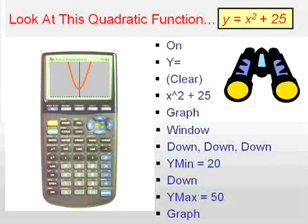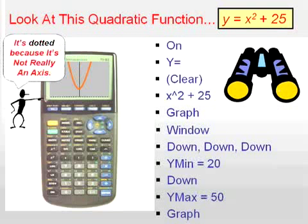Now you'll see the picture that you expected, a quadratic parabola. Now it's interesting to note that this dotted line here is not really an axis. That's why it's dotted. It's to warn you that it's the edge of your window, but it's not the x-axis. It's to warn you that you're not looking at a standard window.